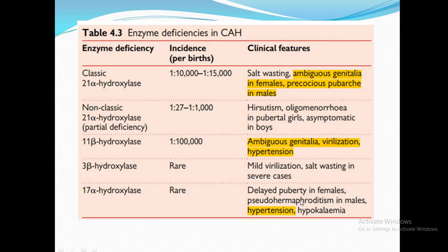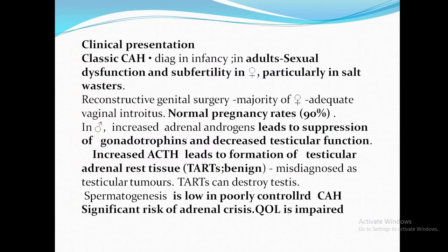For 11-beta hydroxylase deficiency, both aldosterone and testosterone are elevated, giving ambiguous genitalia, virilization, and hypertension. 3-beta hydroxylase deficiency is very rare. These distinctions help differentiate the enzyme deficiencies based on phenotype.